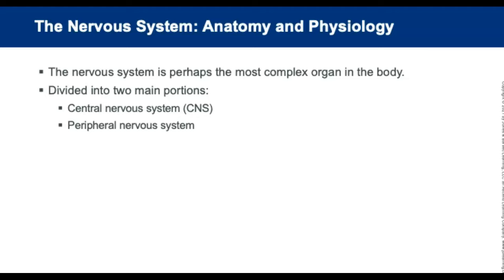The nervous system is perhaps the most complex organ system in the body. It is divided into two main portions: the central nervous system (CNS), consisting of the brain and spinal cord; and the peripheral nervous system, which includes all nerves outside the brain and spinal cord. The peripheral nervous system is further divided into the somatic nervous system, which regulates voluntary control, and the autonomic nervous system, which controls functions that occur automatically.